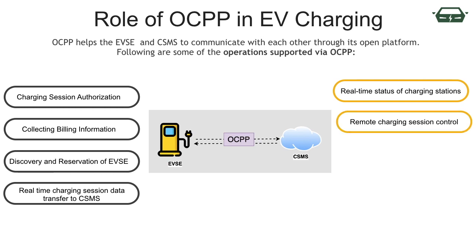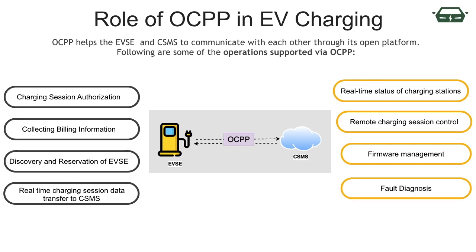Operators can remotely control the charging session — that is, starting or stopping a charging event or changing the status of a charger. They can also upgrade firmware and configure new charging points, as well as read and repair errors logged by the EVSEs.